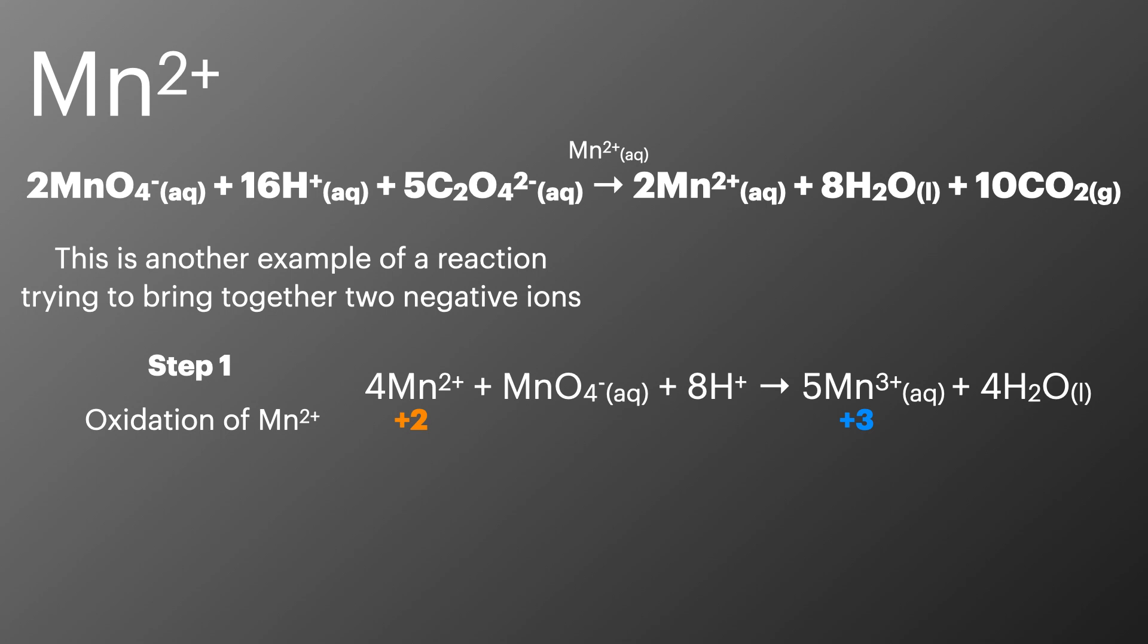In step 2 the Mn3+ now reacts with C2O4 2- to produce carbon dioxide. This reaction again shows the catalyst transporting electrons between two species to facilitate the redox reaction.